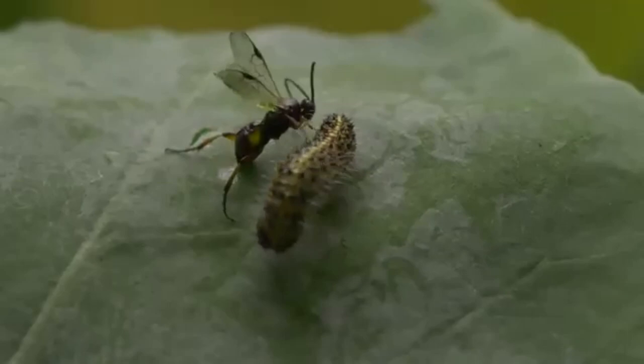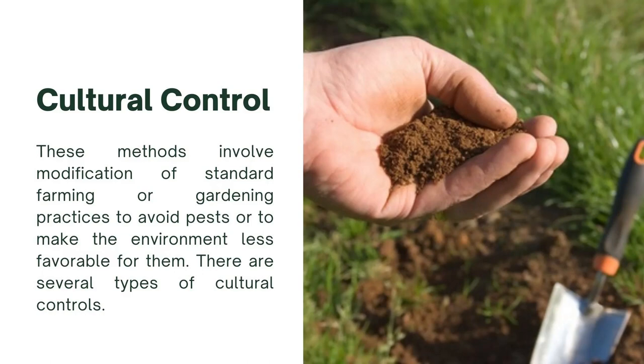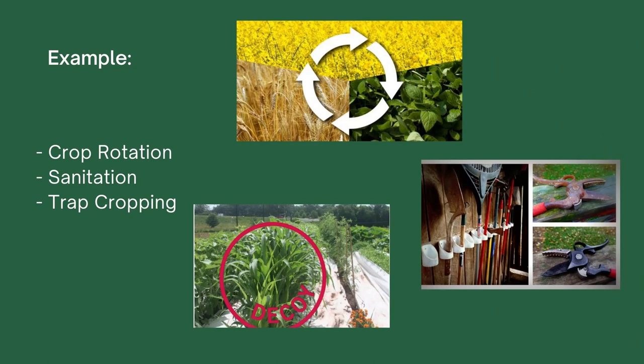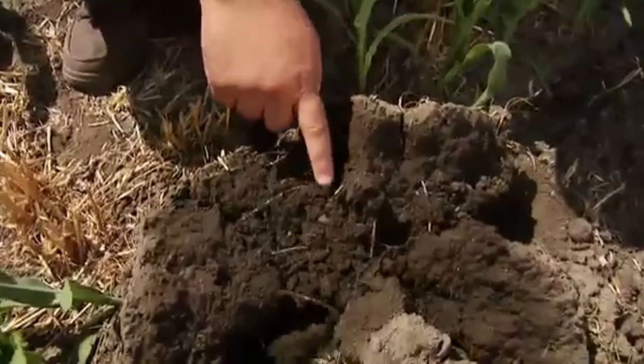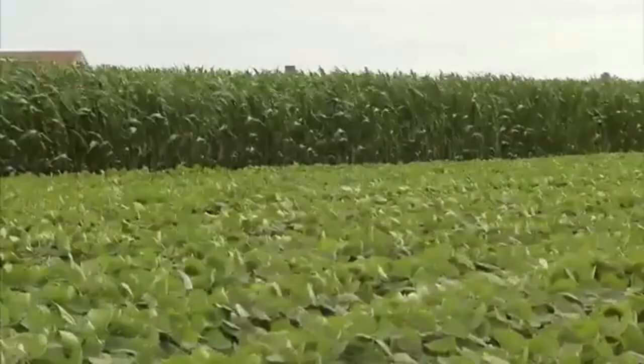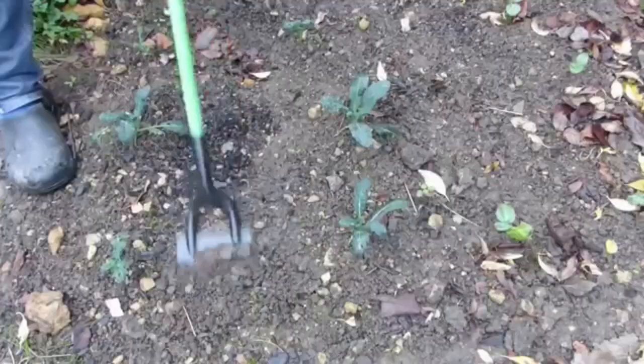Cultural control is a method that involves farming or gardening practices to reduce or avoid pests. Examples of cultural control are crop rotation, sanitation, and trap cropping. Crop rotation is replacing a crop that is susceptible to a serious pest with another crop that is not susceptible on a rotating basis. Crop rotation is best in larger areas. Sanitation is keeping the area clean, and materials or tools that have been used should also be kept clean.